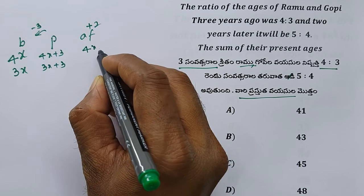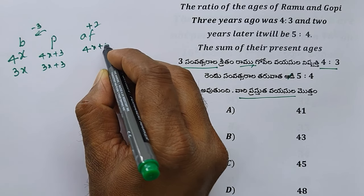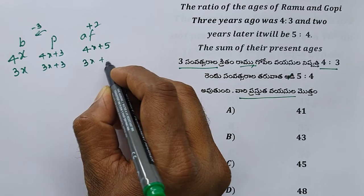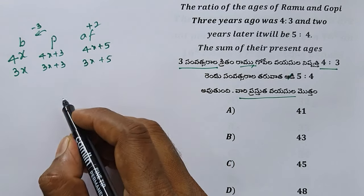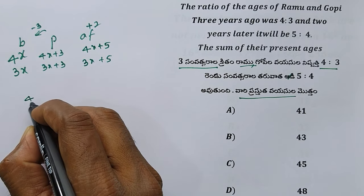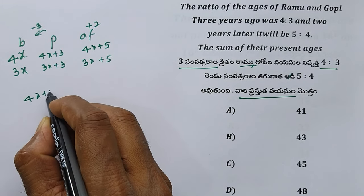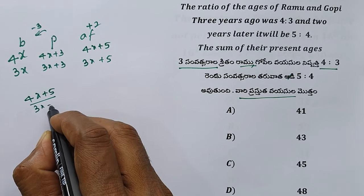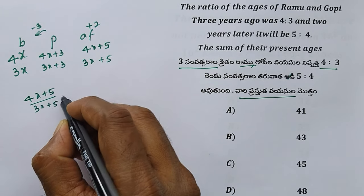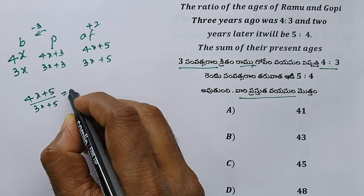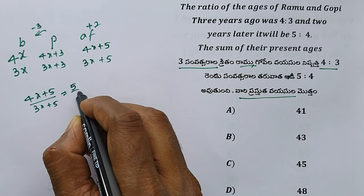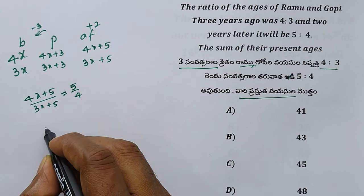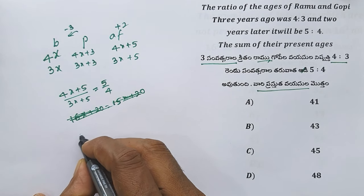After 2 years, 4x plus 3 and 3x plus 5 is equal to 5 by 4. Cross multiplying, after 2 years the ratio 5 by 4 gives us the equation to solve.